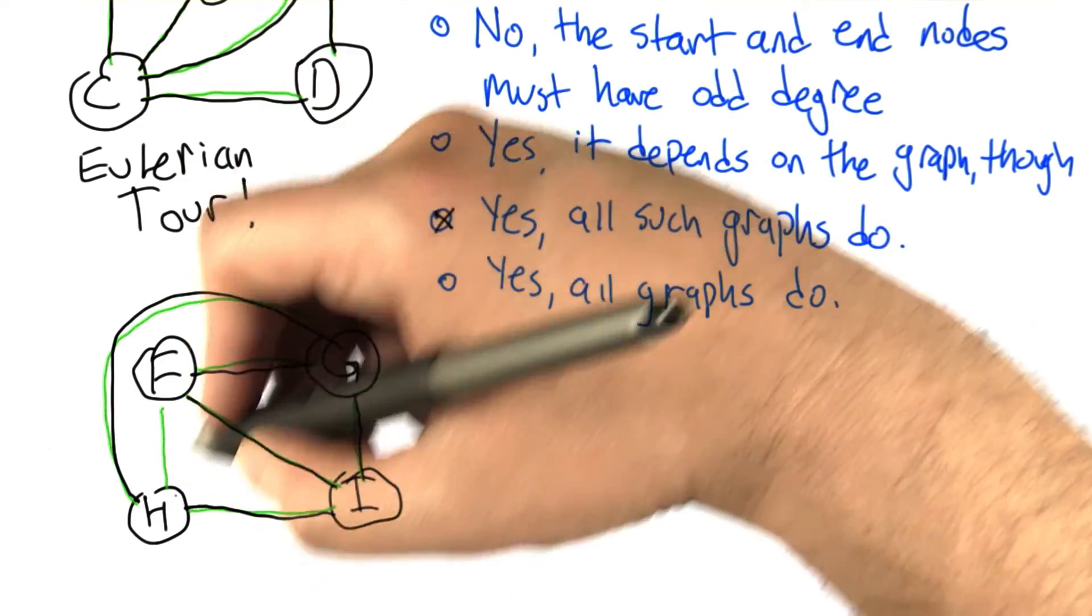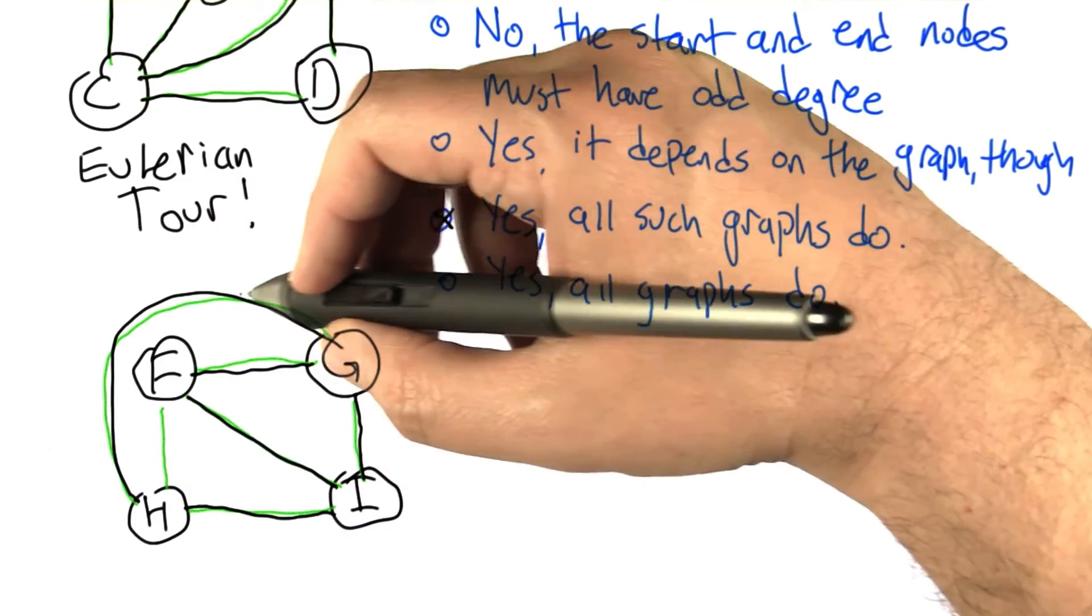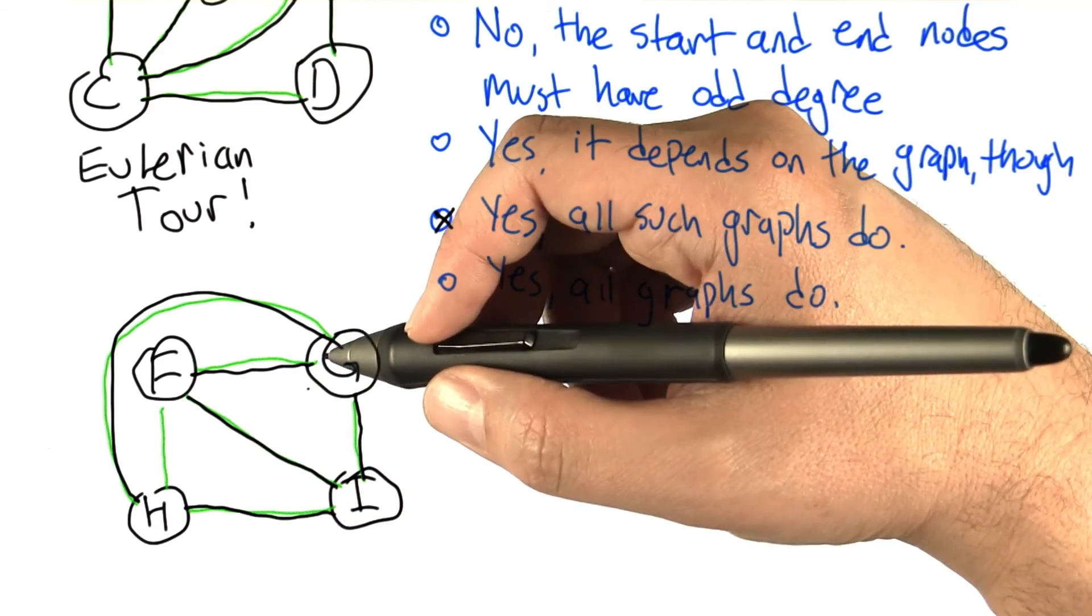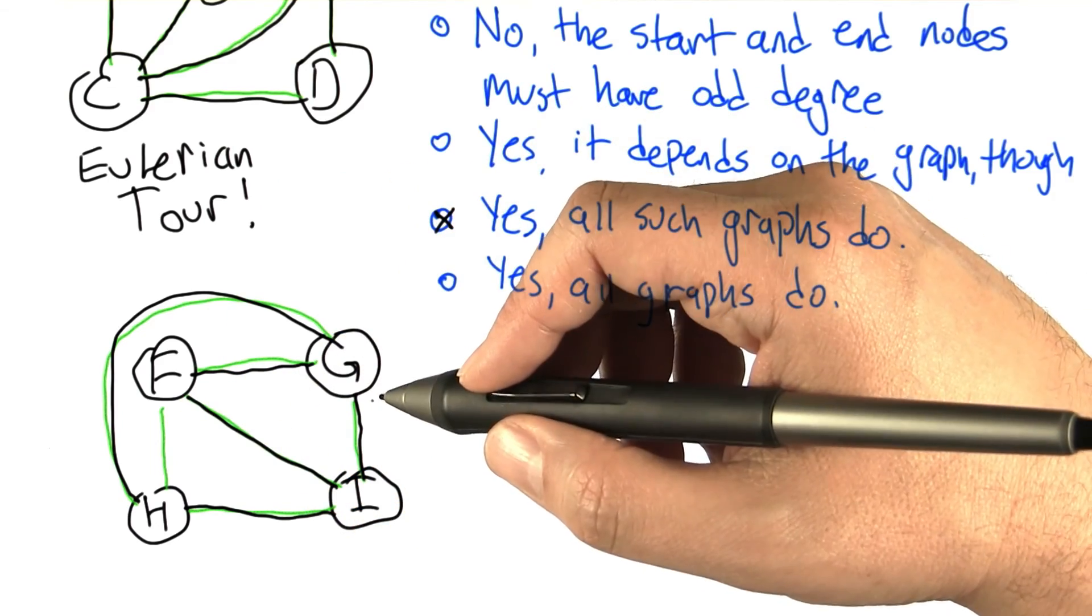again, each node in this case has an odd degree. Every part of the path has to come into the node and out of it, so it has to have even degree except for the end points. No matter what, we're going to be stuck.